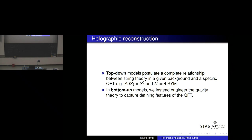The big advantage of a top-down model is that you have a complete relationship between string theory on a given background and a specific quantum field theory — the archetypal example being AdS5 × S5 and N=4 super-Yang-Mills. But top-down models are often very complex to work with. So we often instead work with bottom-up models where we engineer the gravity theory to capture the defining features of the quantum field theory. This was used to considerable effect in the AdS-CMT and AdS-QCD talks during this conference.